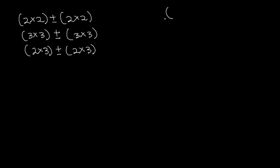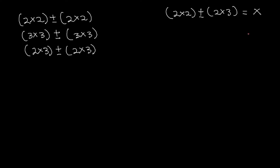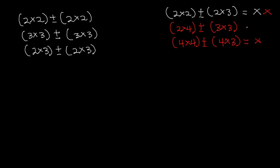But in cases where the order of the matrices are not the same — for instance, if we have a 2×2 matrix and we have to add or subtract it from a 2×3 matrix — this is not possible. We cannot add or subtract matrices that do not have the same order. Similarly, we cannot add a 2×4 matrix to a 3×3 matrix, or a 4×4 matrix to a 4×3 matrix. We can only add matrices that are of the same order.